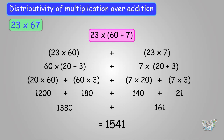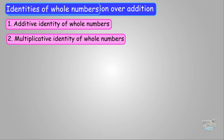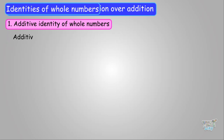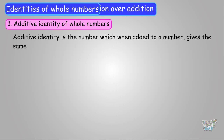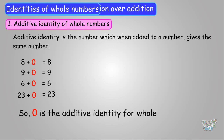Now let's learn another property of whole numbers: the identities of whole numbers — the additive identity and the multiplicative identity. The additive identity is the number which, when added to any whole number, gives the same number. This additive identity is 0. Adding 0 to any whole number gives the same whole number: 8 plus 0 is 8, 9 plus 0 is 9, 6 plus 0 is 6, 23 plus 0 is 23.